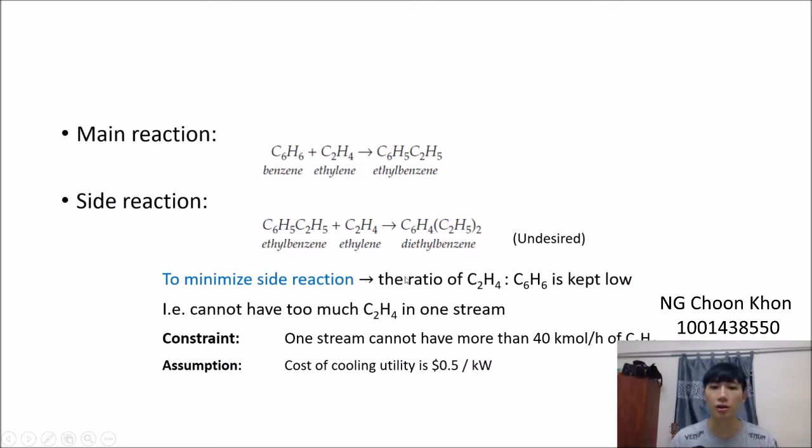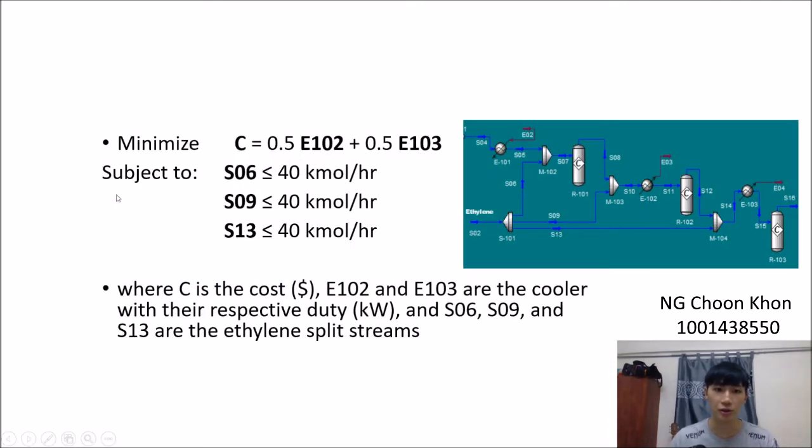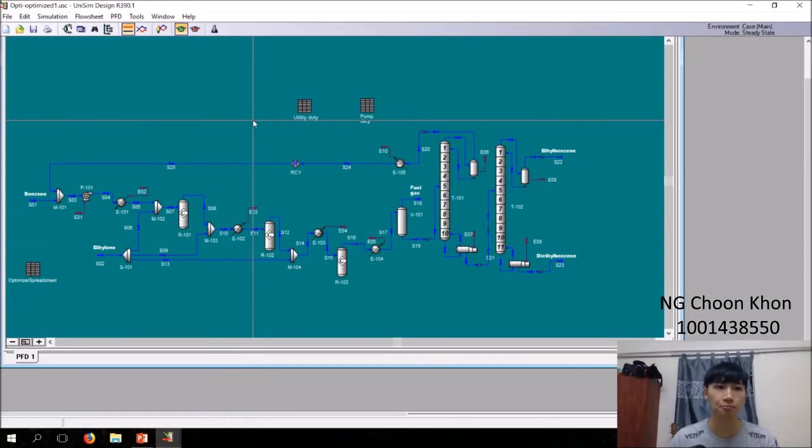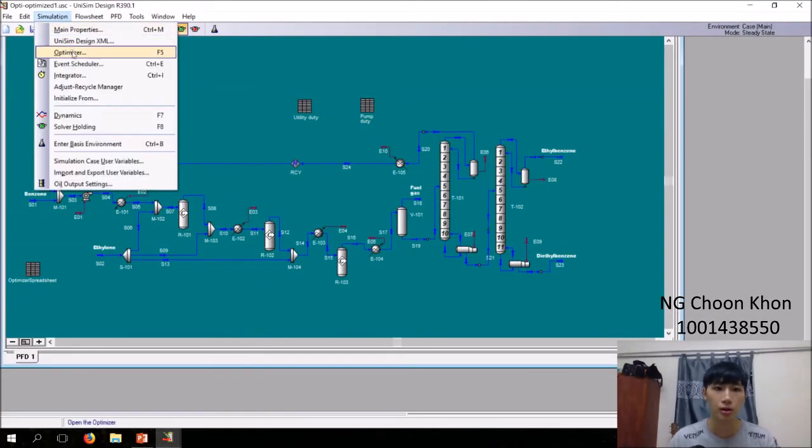There is the possibility of side reaction. The production of diethylbenzene is undesired. That is why we want to minimize this side reaction when setting the constraint. To minimize this side reaction, the ratio of ethylene to benzene needs to be kept low, meaning one stream cannot have too much ethylene molar flow. We set our constraint as one stream cannot have more than 40 kmol per hour of ethylene. We assume cooling utility is 0.5 dollars per kilowatt.